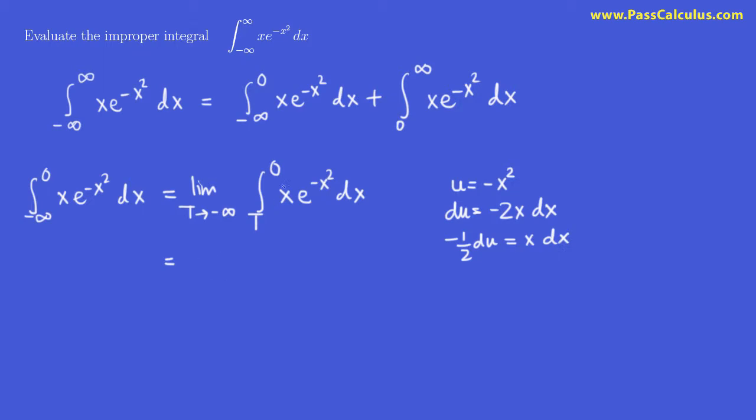And notice we can change the bounds as well. If I evaluate u of zero, I get minus zero squared which is zero. And I evaluate u of t, I get minus t squared. So what does this new integral become? The t becomes minus t squared. The zero stays as zero. x dx is right here. That's the same as minus one half du. e to the minus x squared is going to become e to the u. x dx is minus one half du.